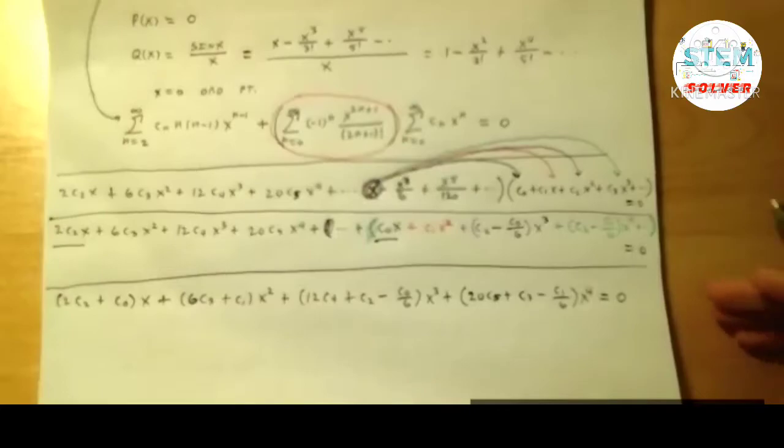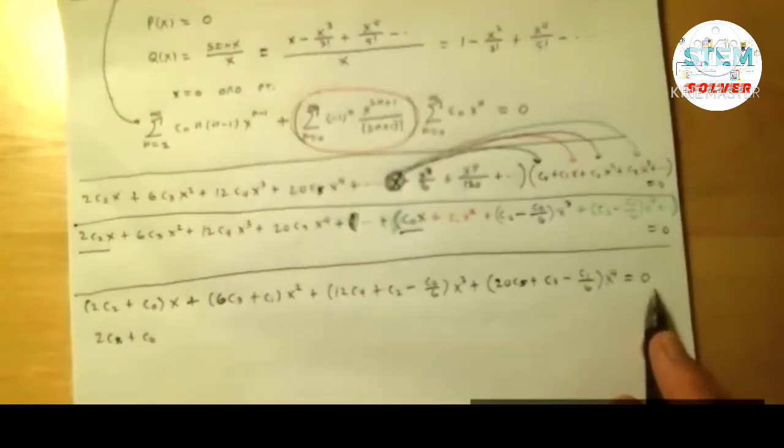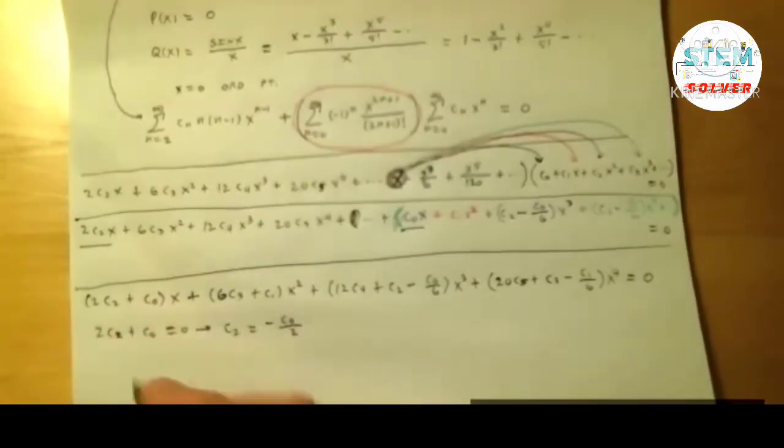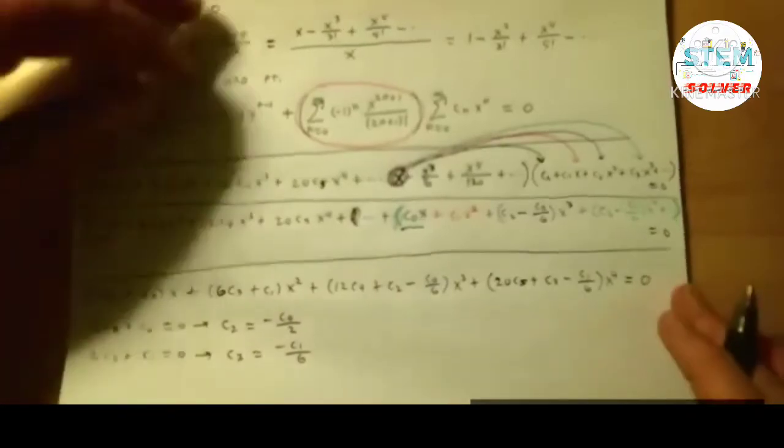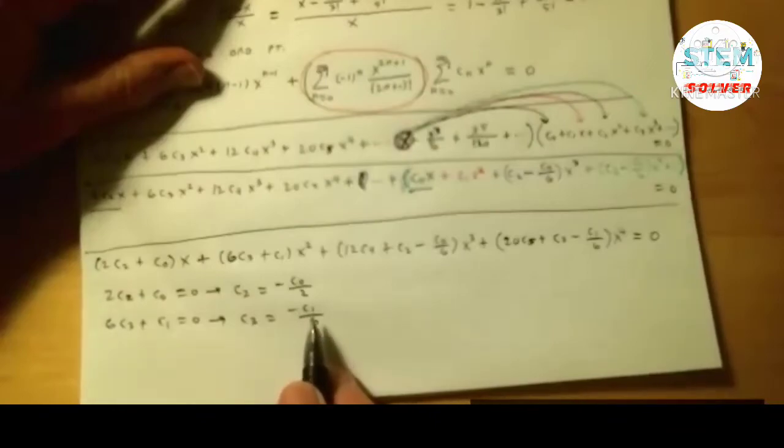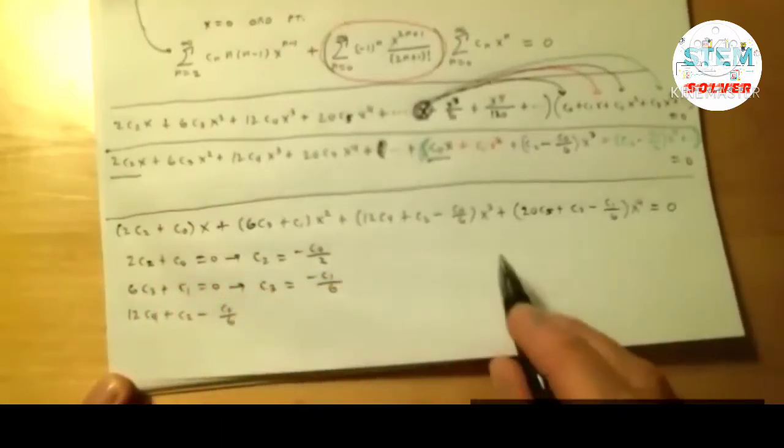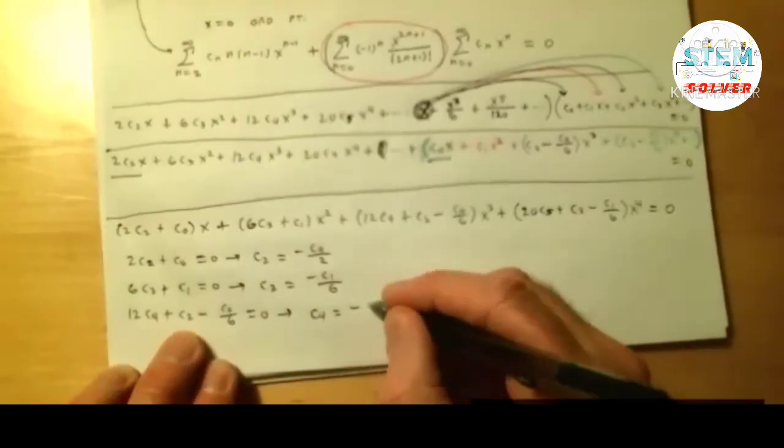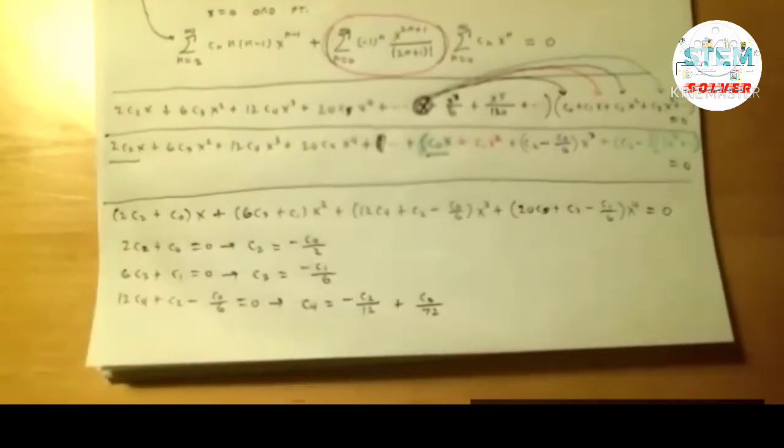Now at this point, what we're going to do is equate coefficients again. So again, this is homogeneous. If it was not, we would just do the same thing, constants over here. So what we will do here is say 2c2 plus c0. The coefficient on x here should equal the coefficient on x here, which of course is 0 because it's homogeneous. So that's equal to 0. We'll solve for the bigger one. So c2 would be negative c0 over 2. Then each one. So we'll look at the coefficient of x squared. 6c3 plus c1 has to equal 0. c3 is negative c1 over 6. Now, at this point, we don't know what any of these things are. We don't know c0, we don't know c1, which is fine. That should show up in our answer.